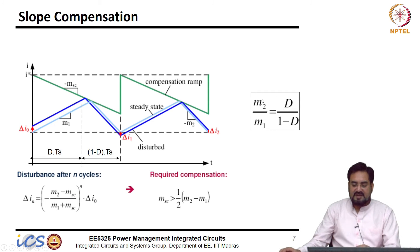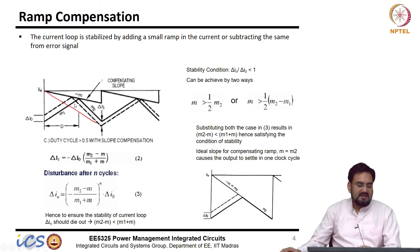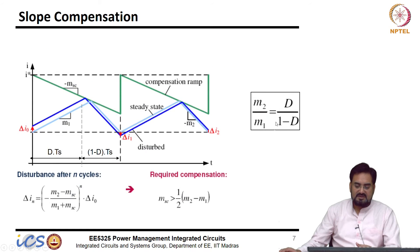So, this is the same case. So, now, if I look at the M2 over M1 ratio, what is that? What is M1? Vin minus Vout over L. M2. Vout over L. So, the two slopes you take the ratio, it will be D over 1 minus D, L will get cancelled out.